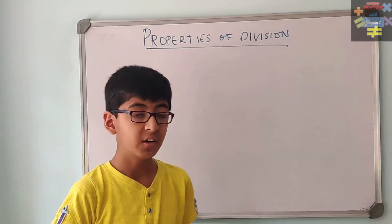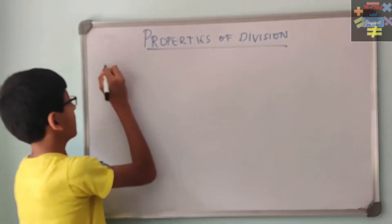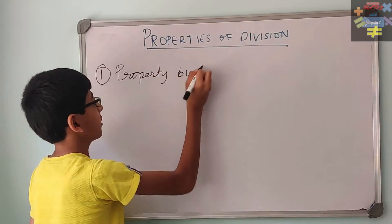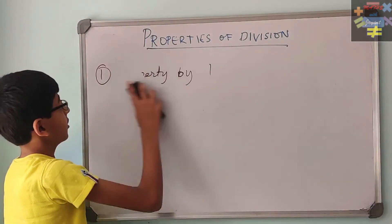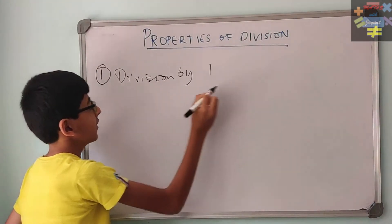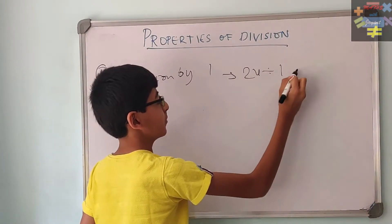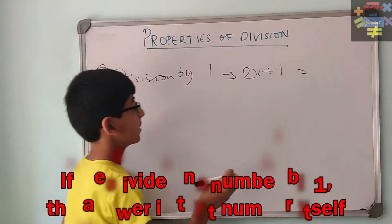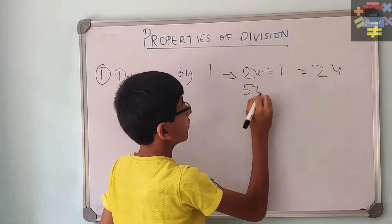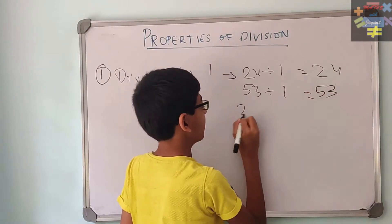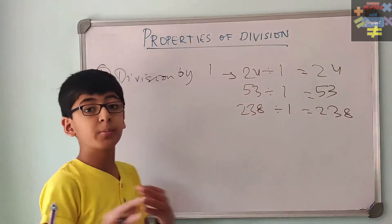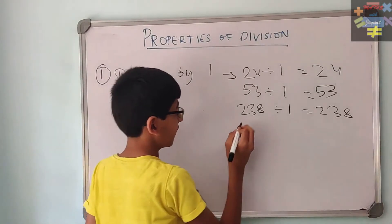Let us learn the first property: division by 1. If we divide any number by 1, we are going to get the same number itself. For example, 24 divided by 1 will be 24. 53 divided by 1 will be 53. And even 238 divided by 1 would be 238 itself. No matter how big the number is. Let us understand why.